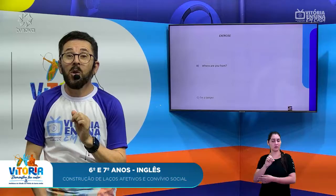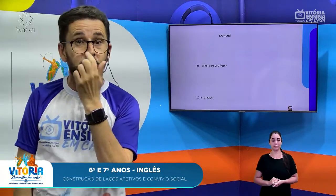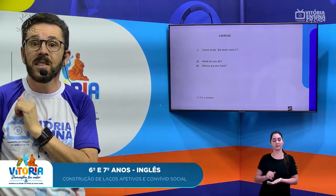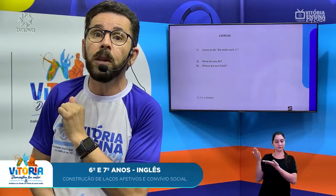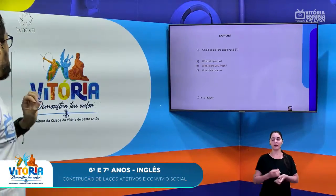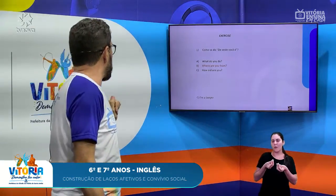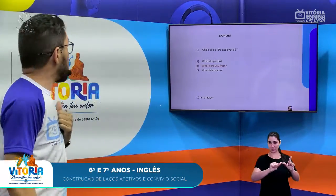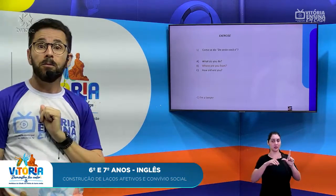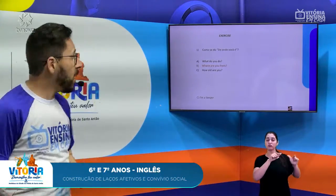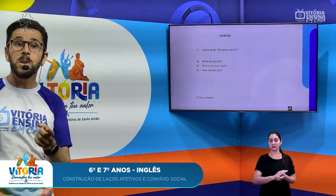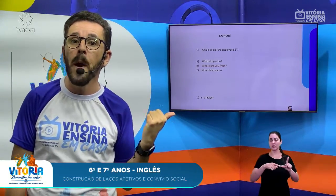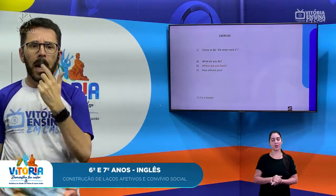Vamos fazer uma review usando este exercício. Como se diz "de onde você é"? Letra A: "What do you do?" — Não, isso é "o que você faz?" Letra B: "Where are you from?" — De onde você é? Letra C: "How old are you?" — Quantos anos você tem? A alternativa certa é a alternativa B: "Where are you from?"